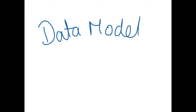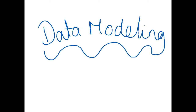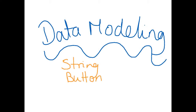Hey, it's Kat looking at data modeling with you today. When we talk about data modeling, we are talking about creating our own objects. Some examples of objects that we've already worked with are string. We've also worked with a type of component, which is also an object, which is a button. We've worked with text fields and we've worked with arrays, just to give a few examples.